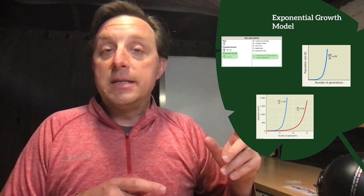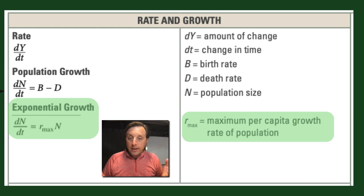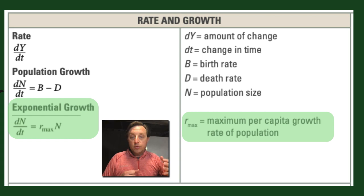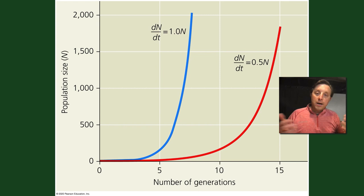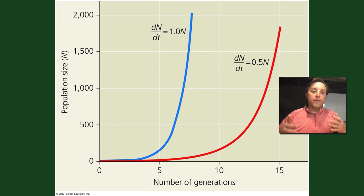The first model is the exponential growth model. The formula — highlighted in green — is dN/dt = r_max × N, where N is the population size and r_max is the maximum per capita growth rate. On a graph, this gives our typical J-shaped curve. The blue line has an r_max of 1 and the red line has an r_max of 0.5. The overall shape doesn't really change — just the steepness of the exponential growth period.